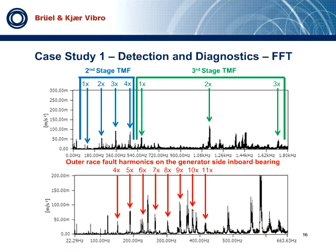FFT reveals an unusual picture for both second and third stages. Usually the tooth mesh frequencies are present in the spectrum, with the first tooth mesh frequency having the highest amplitude. As you can see, this is not the case here. Instead, we see significantly higher levels for tooth mesh frequency harmonics — second, third, and so on — which indicates gear misalignment. Additionally, shaft running speed orders generated by the rotational looseness at the IMS rotor side bearing may also be present.